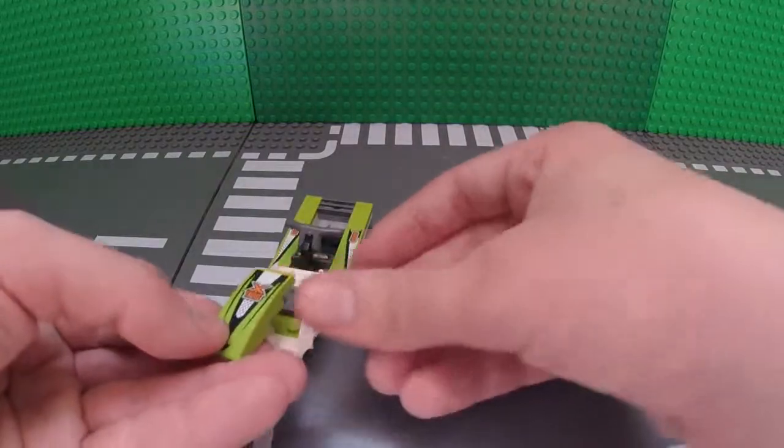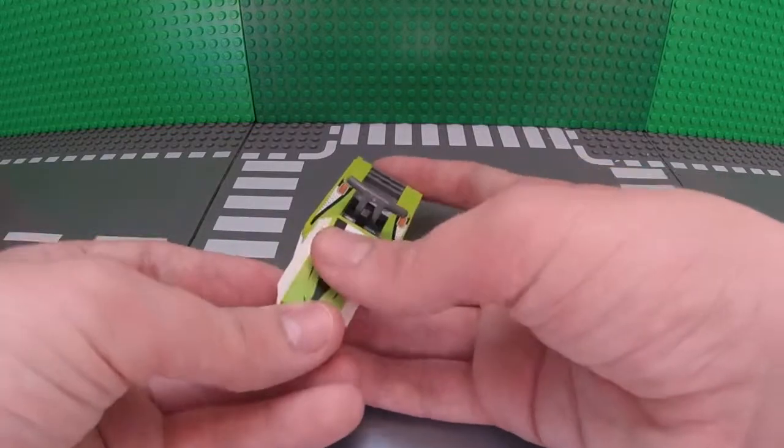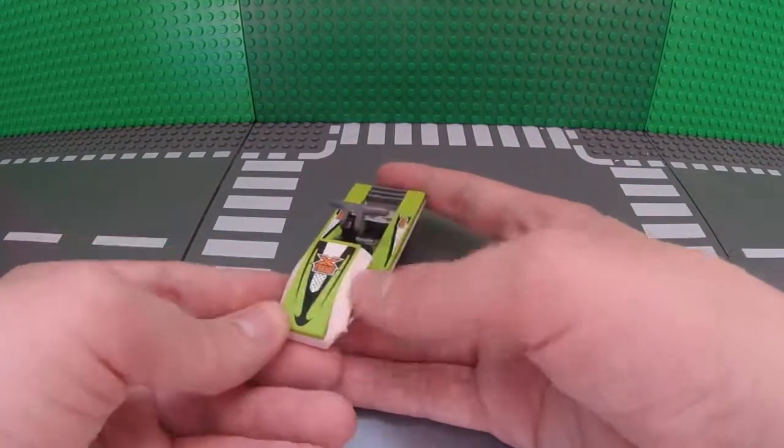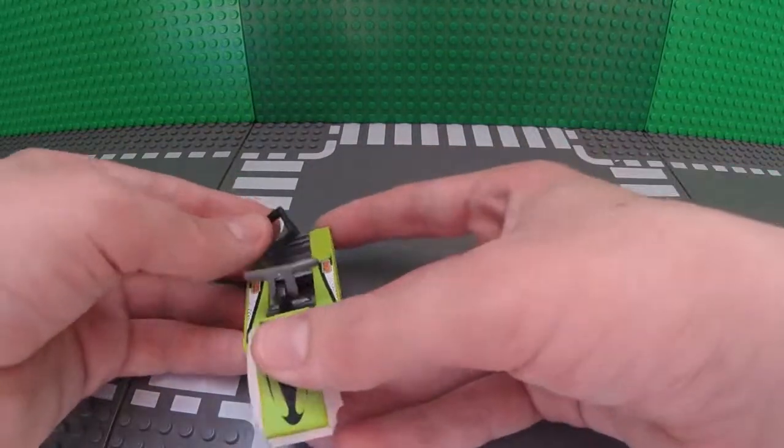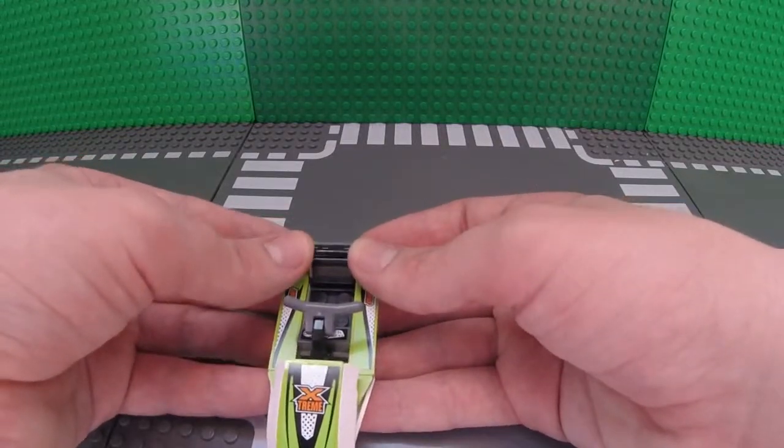Now take the 2x4 sloped piece and place it right in the 2x4 piece right here. Now take this backrest piece and place it right at the back.